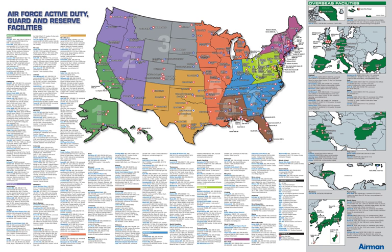United States Air Forces in Europe, Air Forces Africa — USAF Air Component for U.S. European Command. USAF has seven main operating bases along with 88 geographically separated locations.